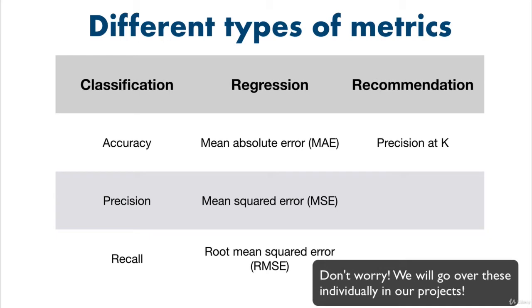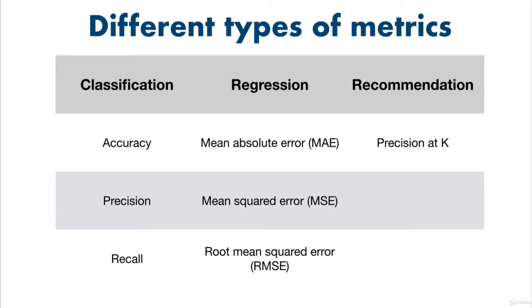Or for recommendation problems, you may have thousands of different products to recommend to someone. But in reality, you only care about the top 10 recommendations and how well they align to a customer's potential interest. To measure this, you could use precision at K, where in our case, K is 10.